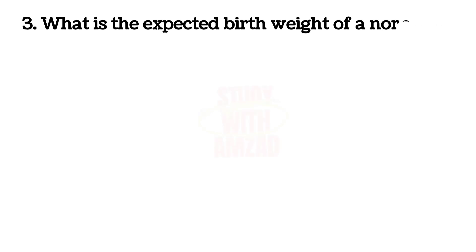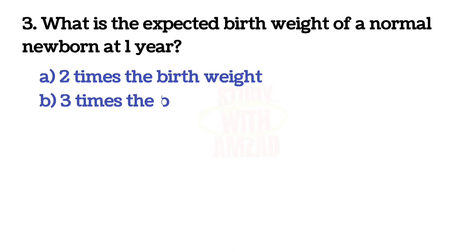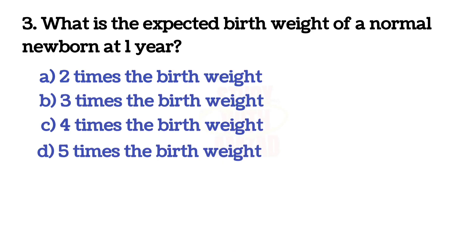Next question: What is the expected weight of a normal newborn at one year? The answer is B — three times the birth weight.